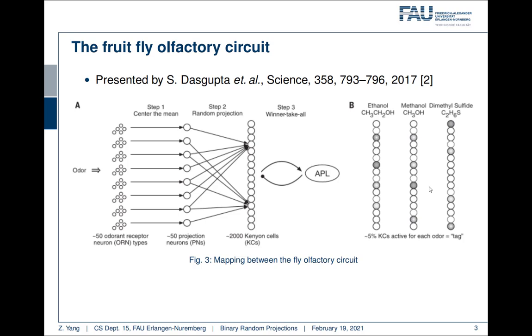In this way, if we experience similar odors, just like on the right hand side first two columns, they would have similar activations. And if we look at the second column and the third column, they are completely different odors and they would have completely different information at these 2000 kenyon cells after the winner-take-all procedure.